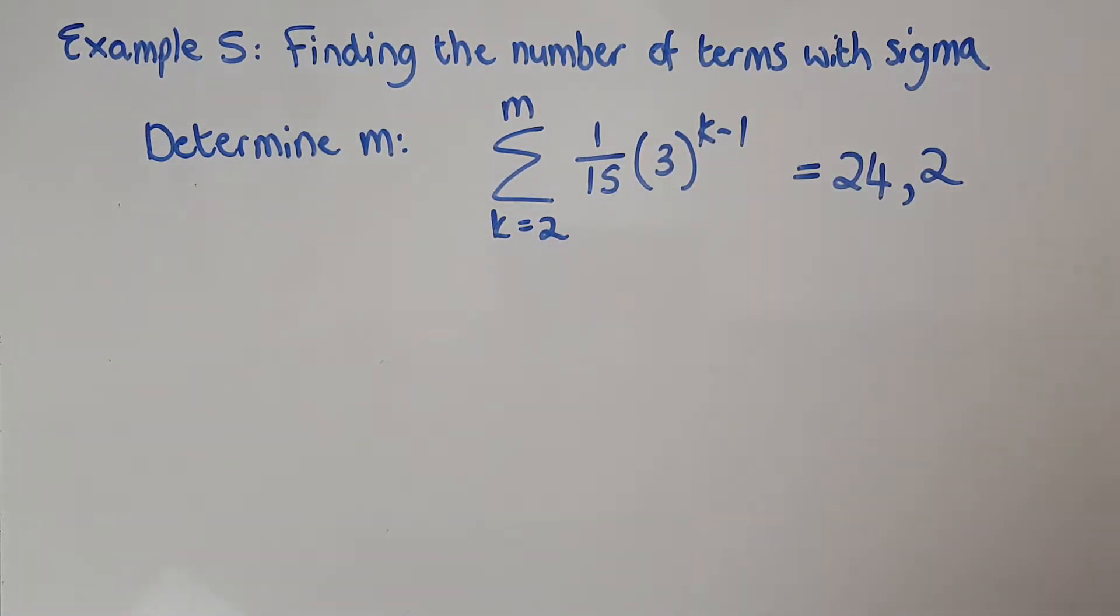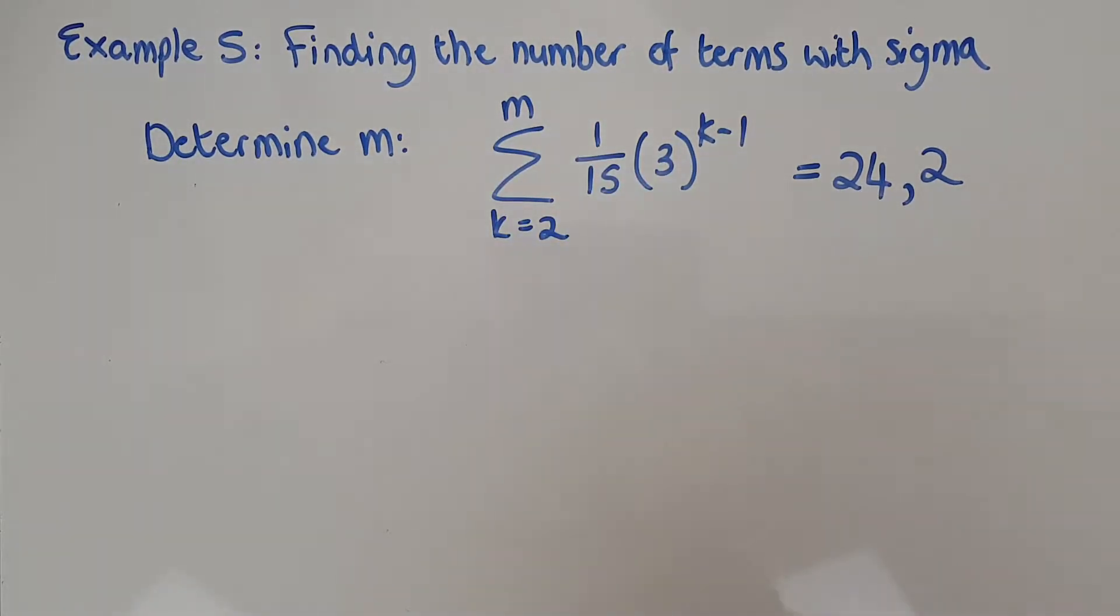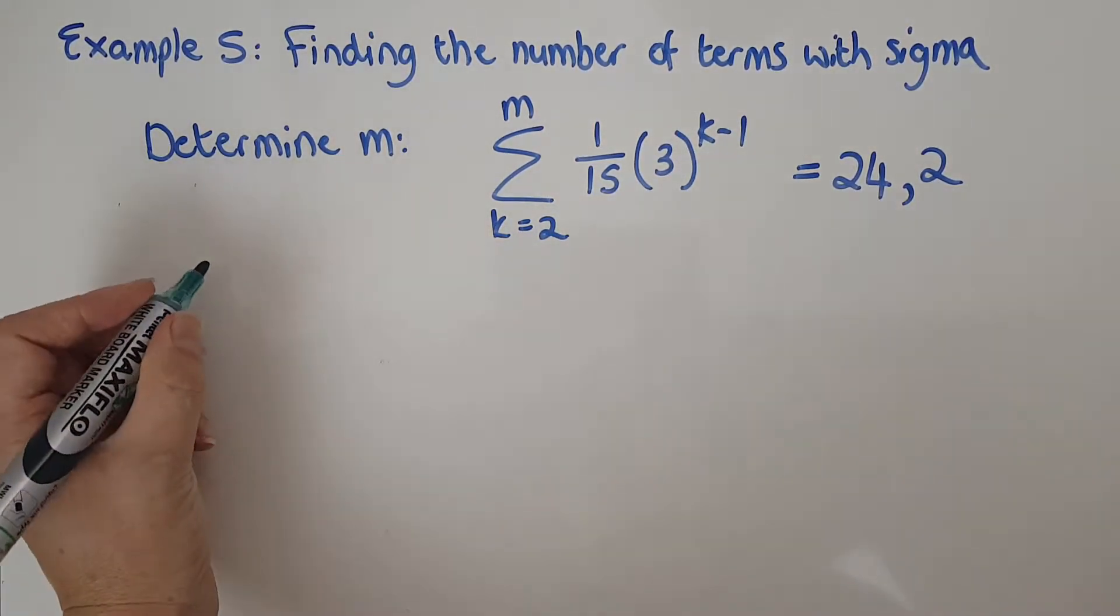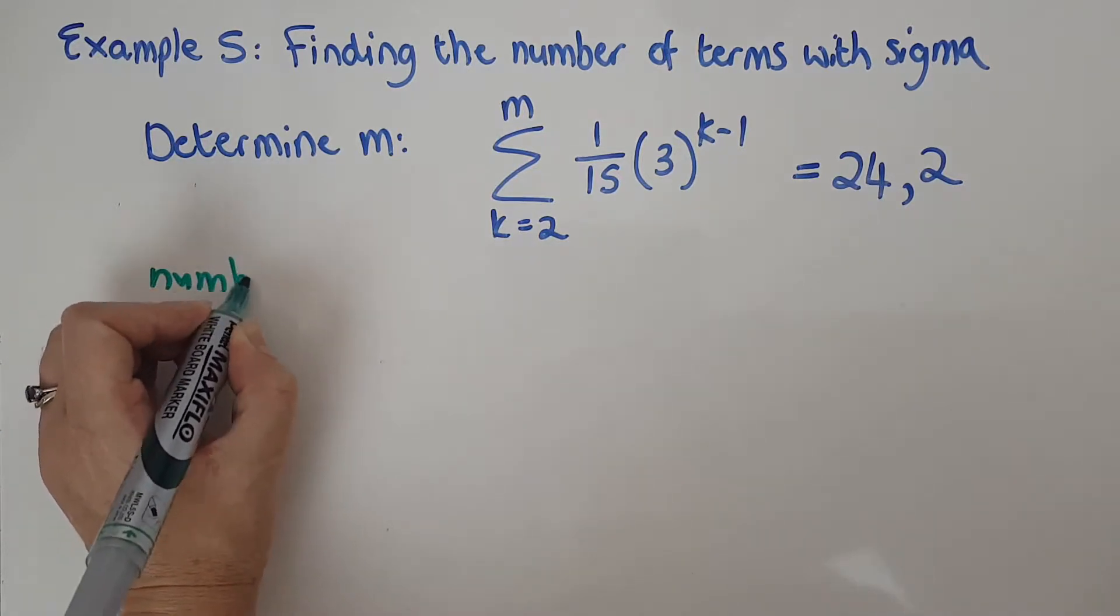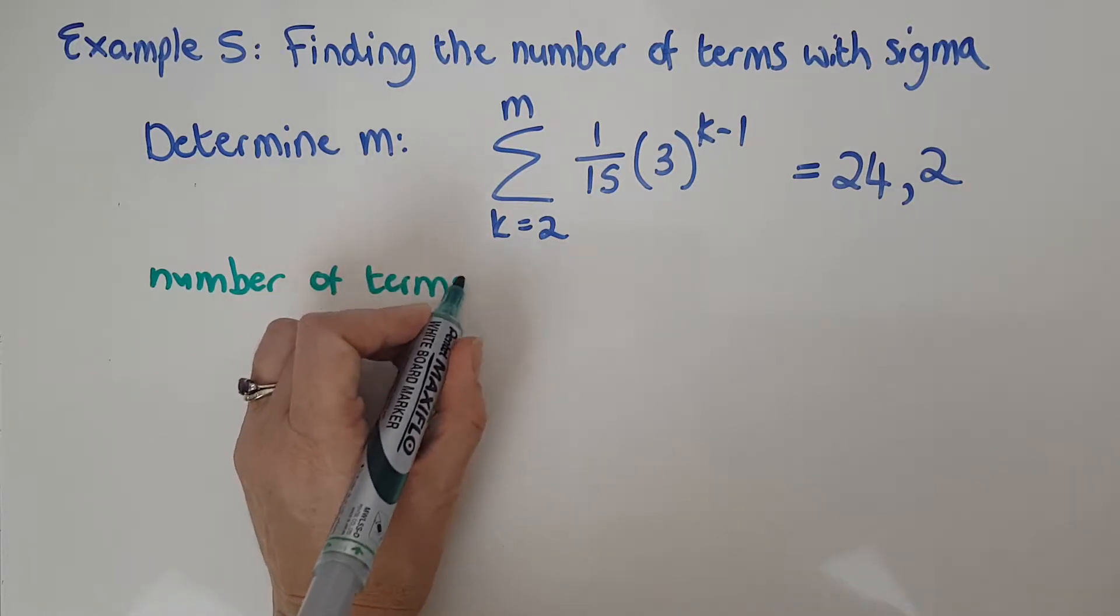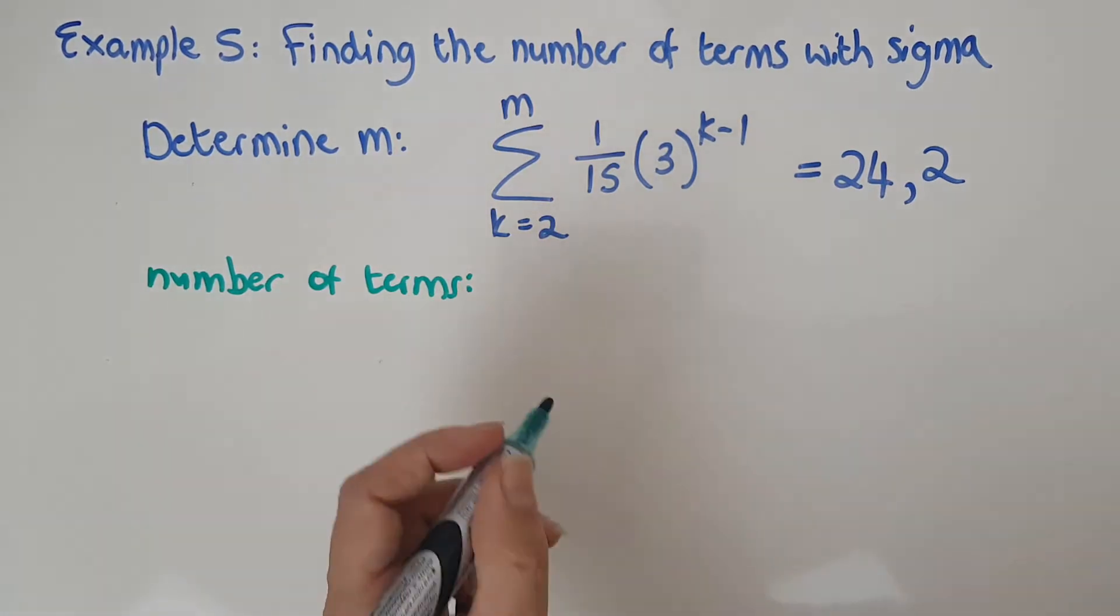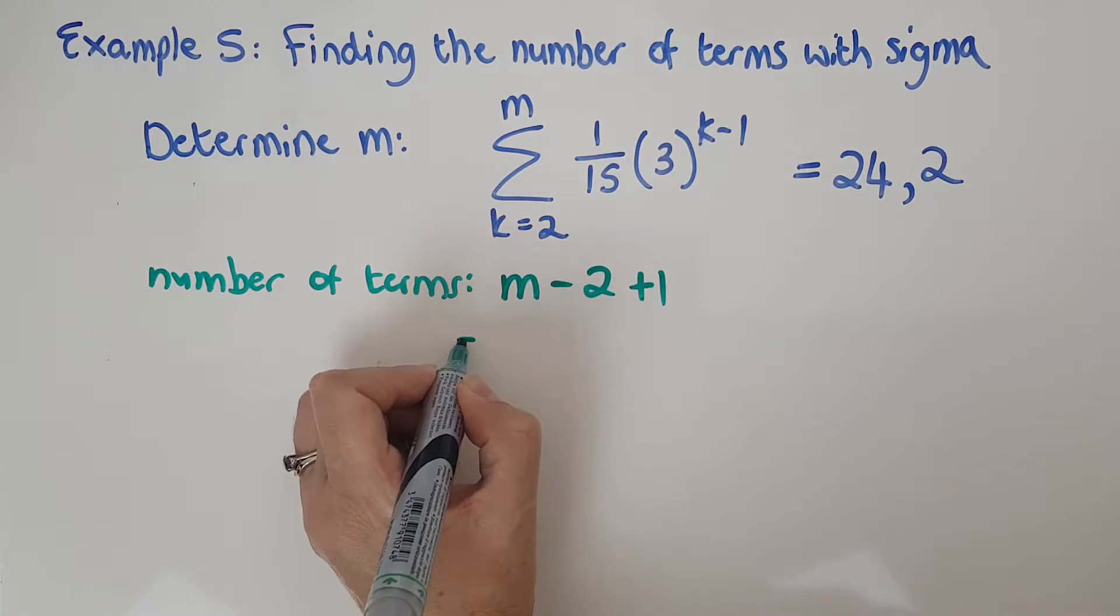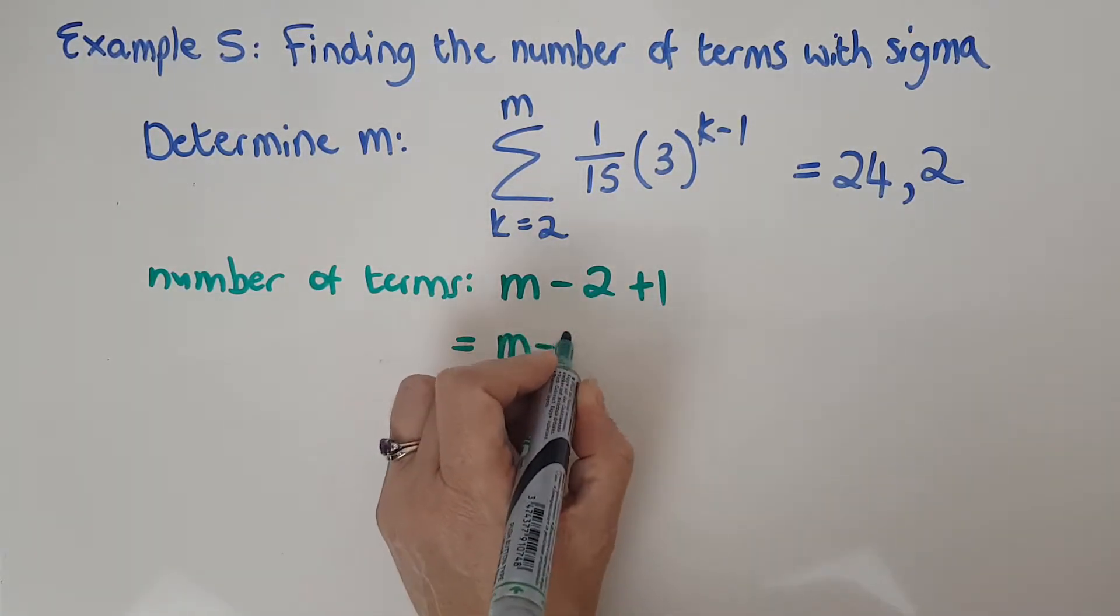I'm going to make some notes for myself because there's going to be a whole lot of sidebar calculations before I can actually even start. So number of terms, I'm actually just going to write that out instead of saying n because it gets confusing. That is going to be top minus bottom plus 1. So it's m minus 2 plus 1, which gives me minus 2 plus 1 is minus 1, so m minus 1.